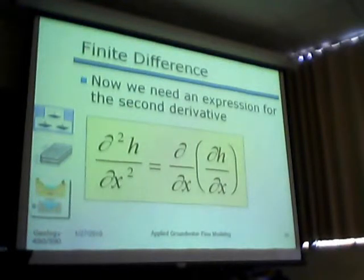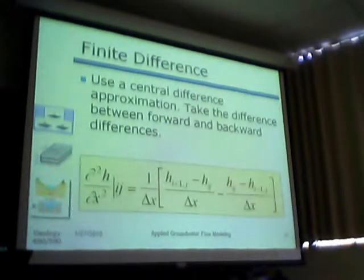So this is a second derivative. To get that, what we do is we take what we did in the forward direction, we take from that what we did in the backward direction, and we divide it by delta x.